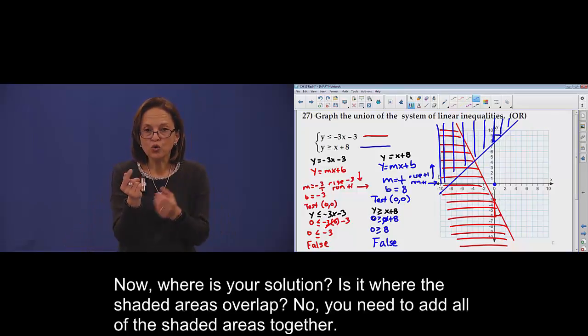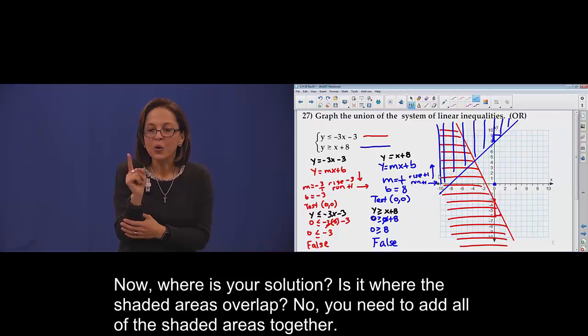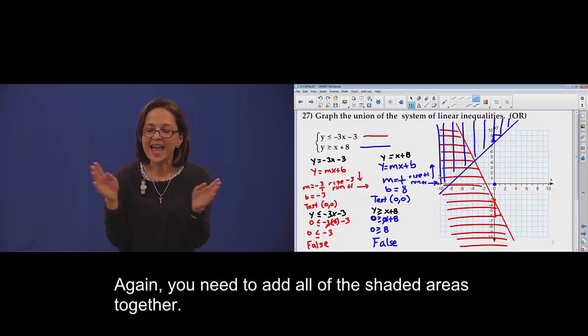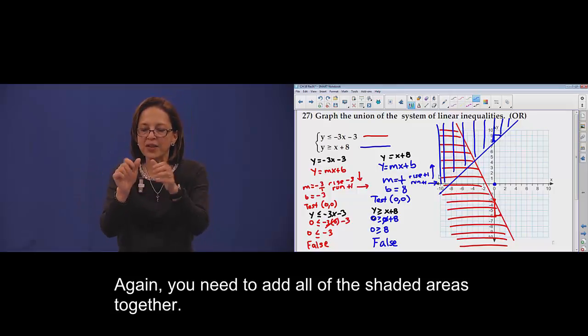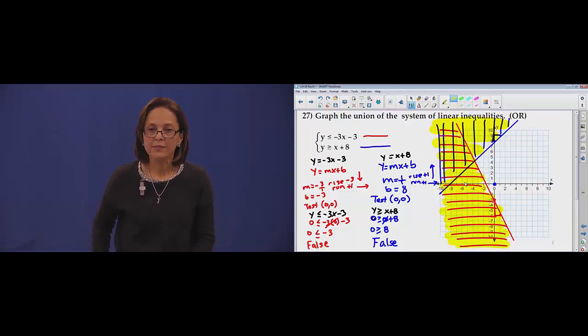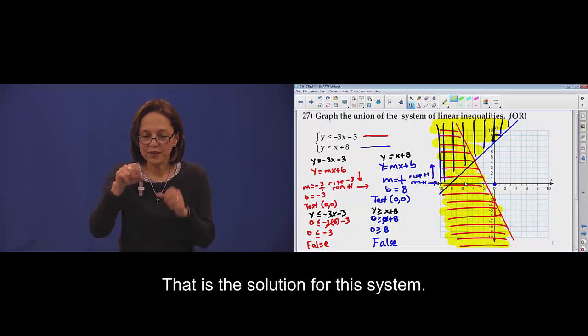Now, where is your solution? Is it where the shaded areas overlap? No, you need to add all of the shaded areas together. That one is the solution for the system.